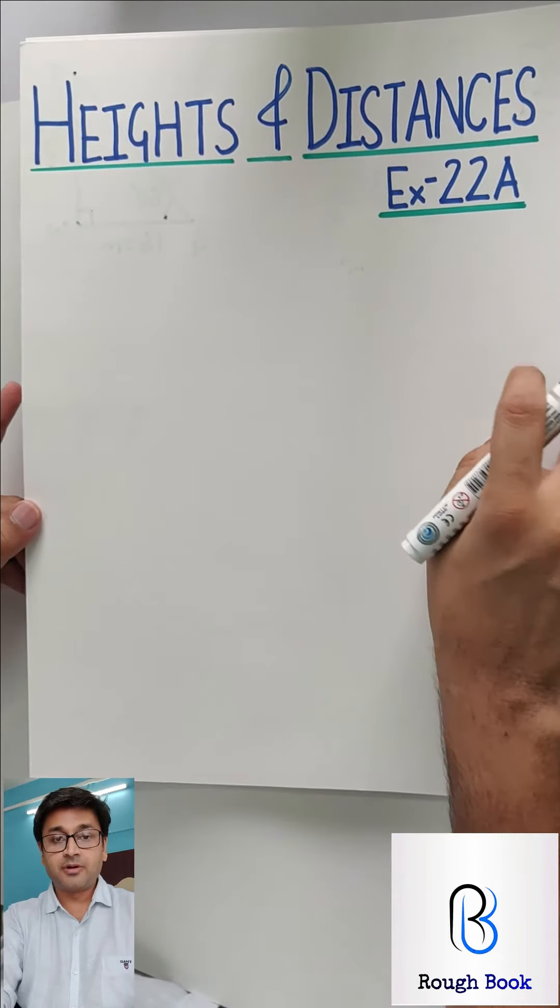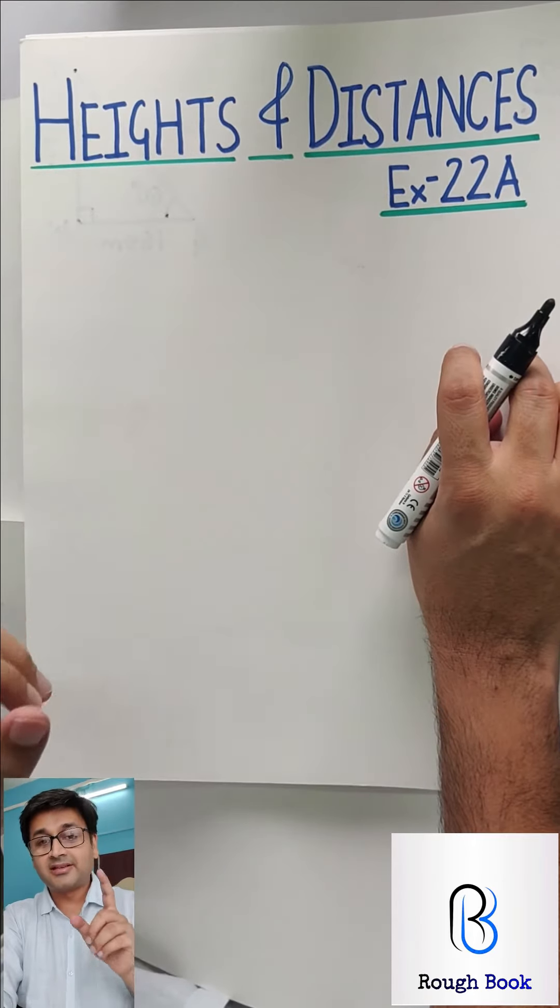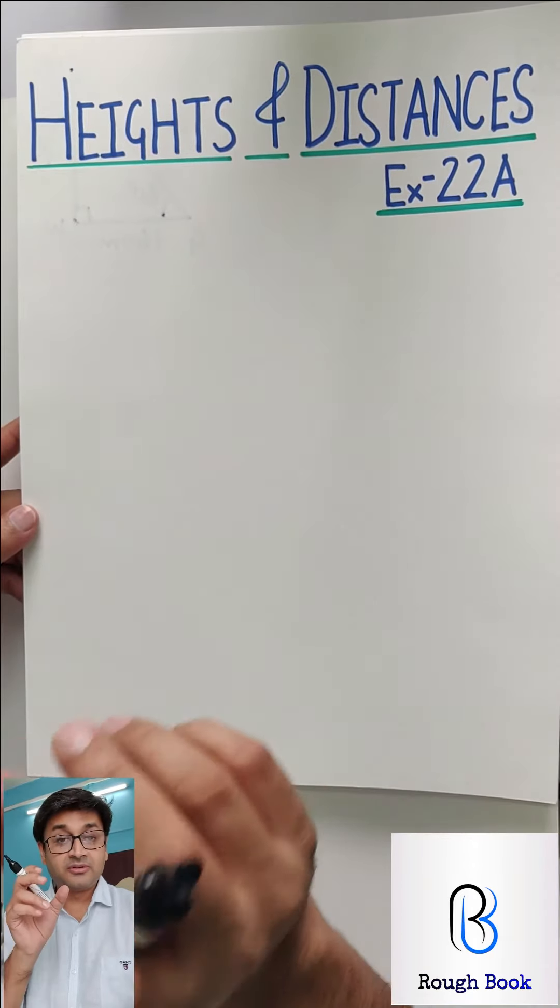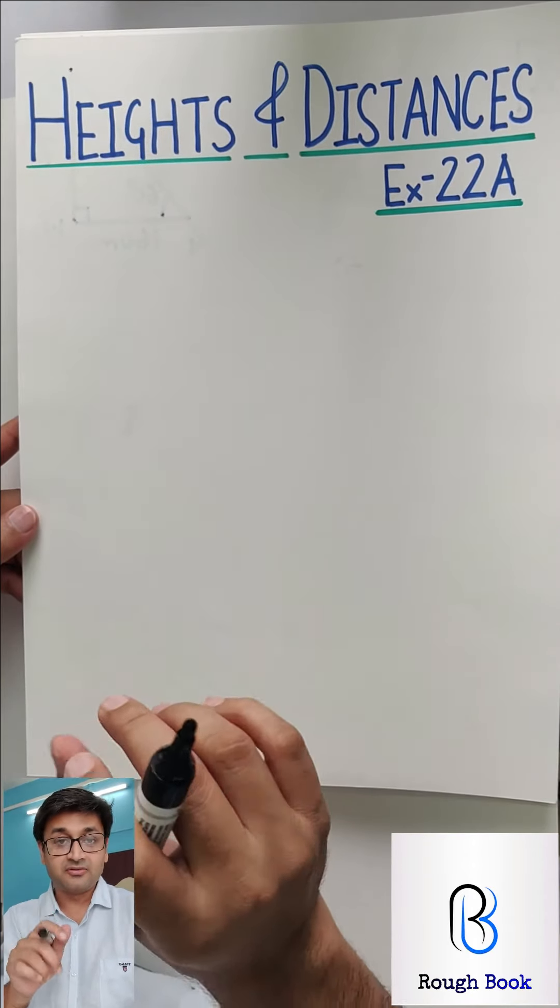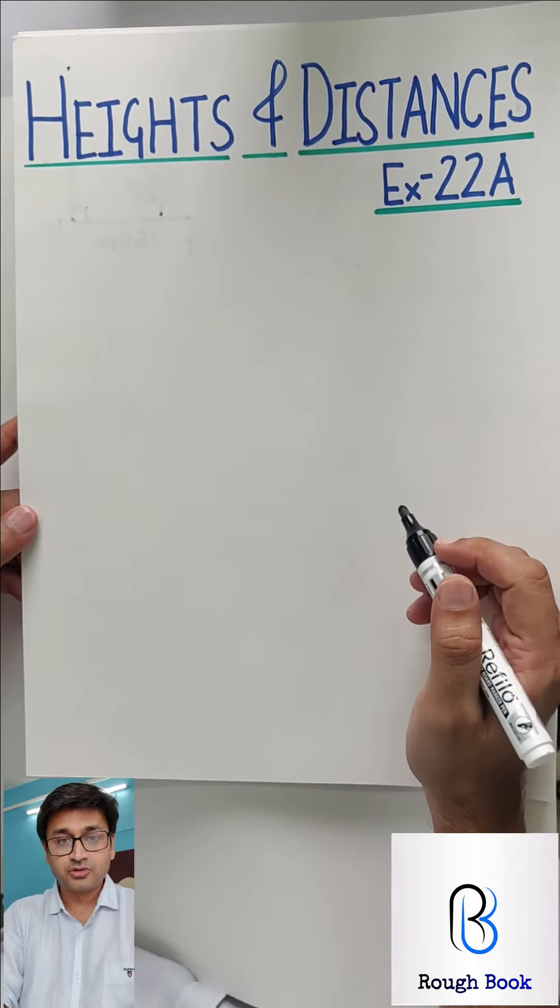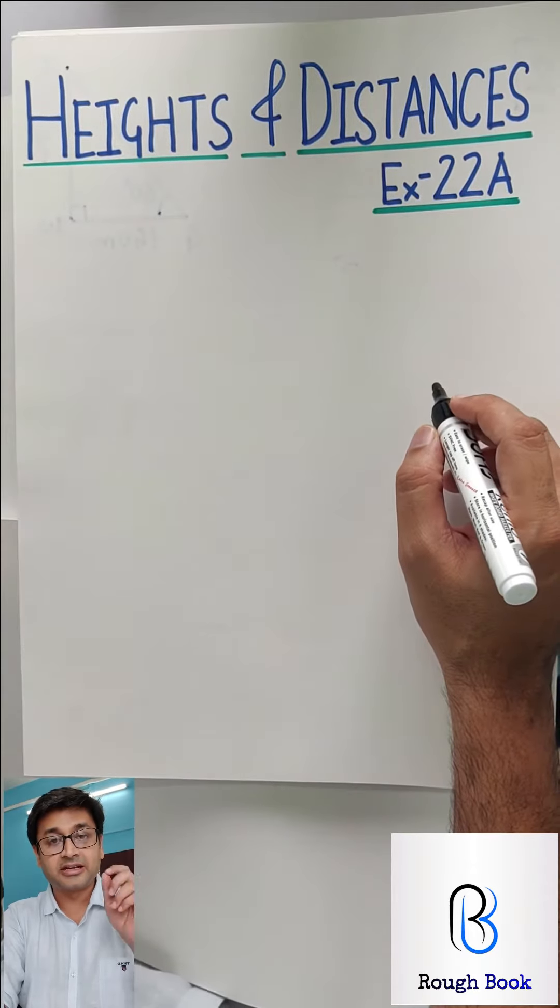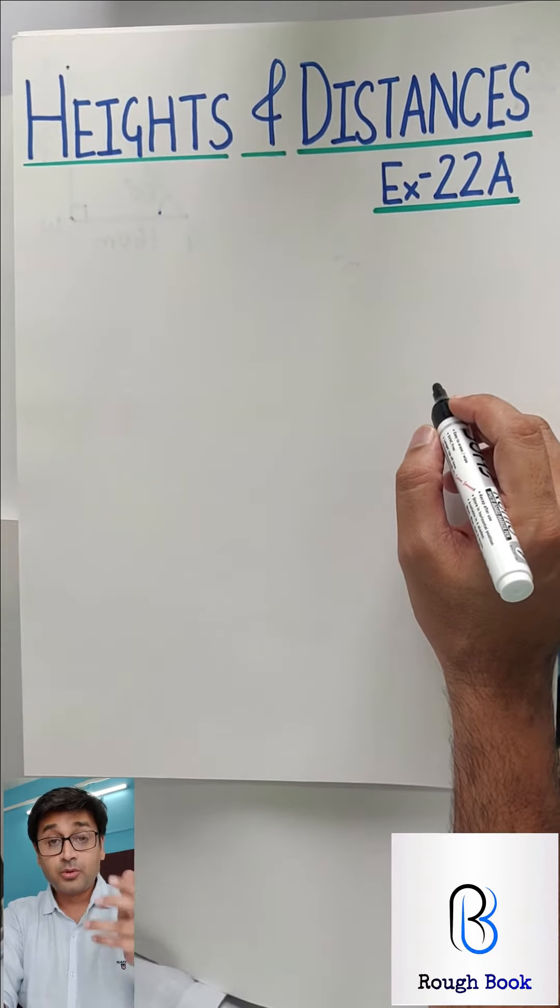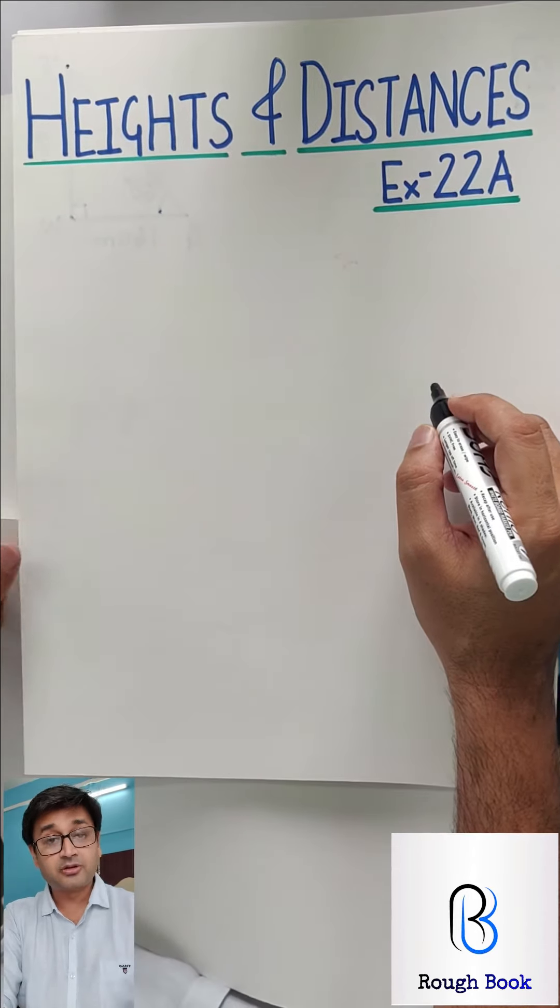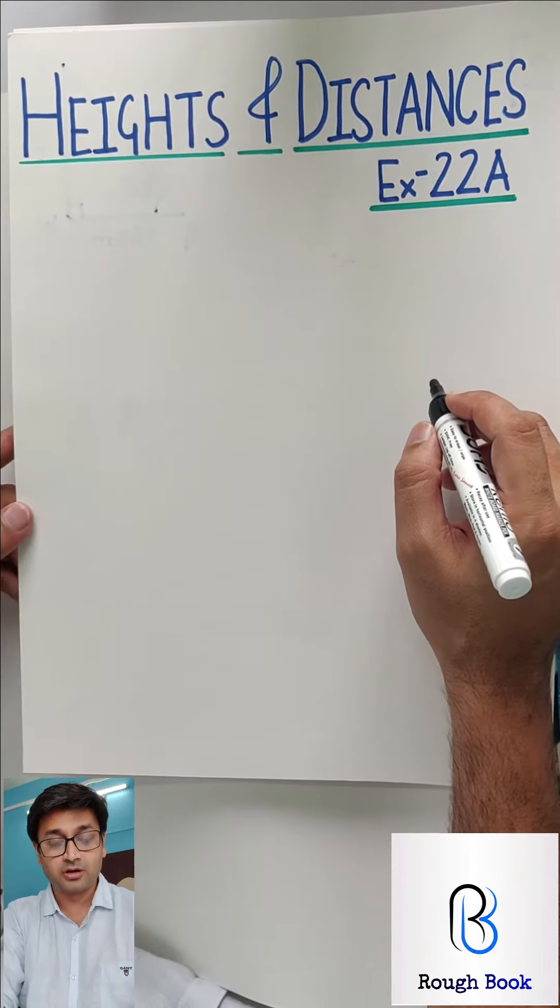Heights and Distances is very much related to Trigonometrical identities. Basically the exercise D in Trigonometry that we had done, where there were some values for sine, cos and tan. This is basically an extension to Trigonometry or a direct application of Trigonometry. Where is Trigonometry applied in real life? It is applied to find heights and distances.